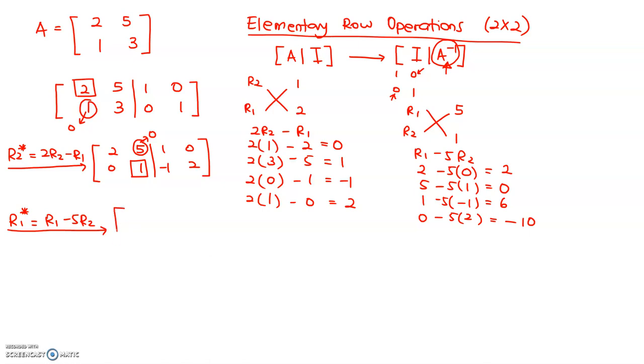So, let us change row 1. It should become 2, 0, 6, negative 10. And for row 2, it should be the same: 0, 1, negative 1 and 2.